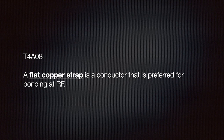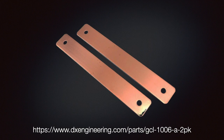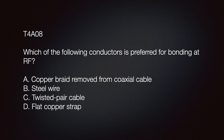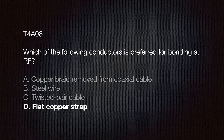Know that a flat copper strap is the preferred conductor for RF bonding. RF bonding is synonymous with RF grounding — RF energy is undesirable around our equipment, so it's good practice to ground station equipment with a common bond. Flat copper straps are best for capturing stray RF and directing it to ground. The question is: which of the following conductors is preferred for bonding RF? A) Copper braid removed from coaxial cable, B) steel wire, C) twisted pair cable, D) flat copper strap. The correct answer is D — flat copper strap.